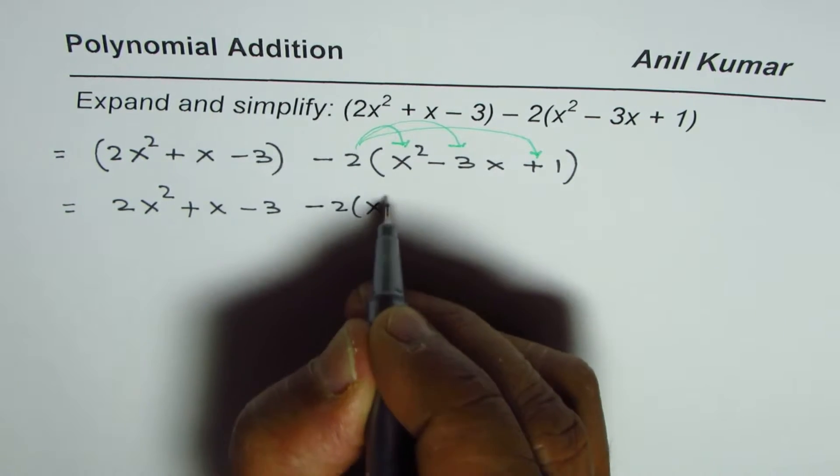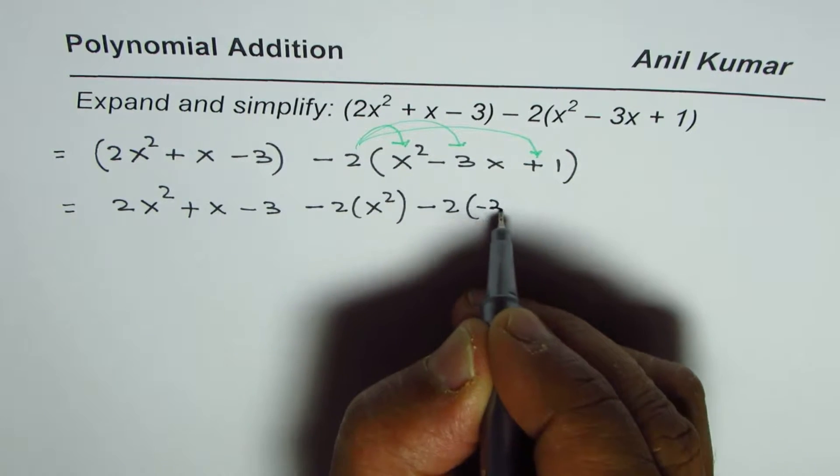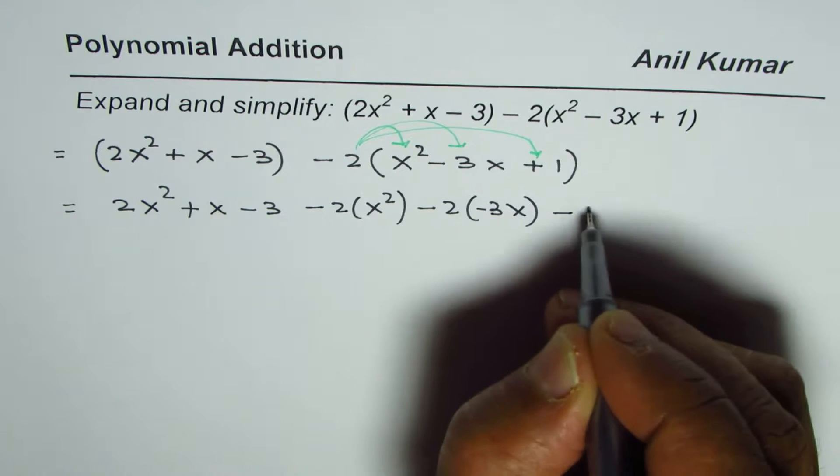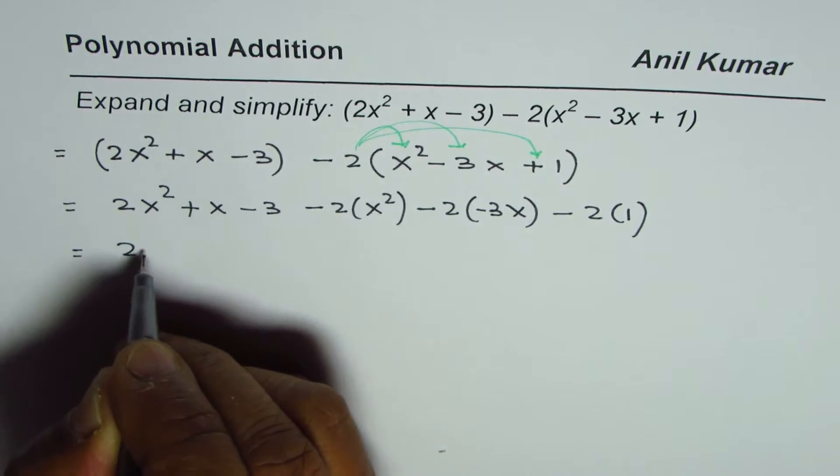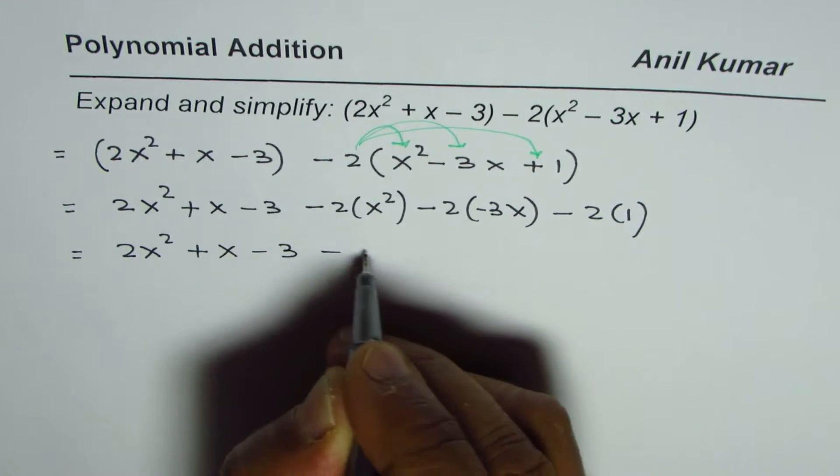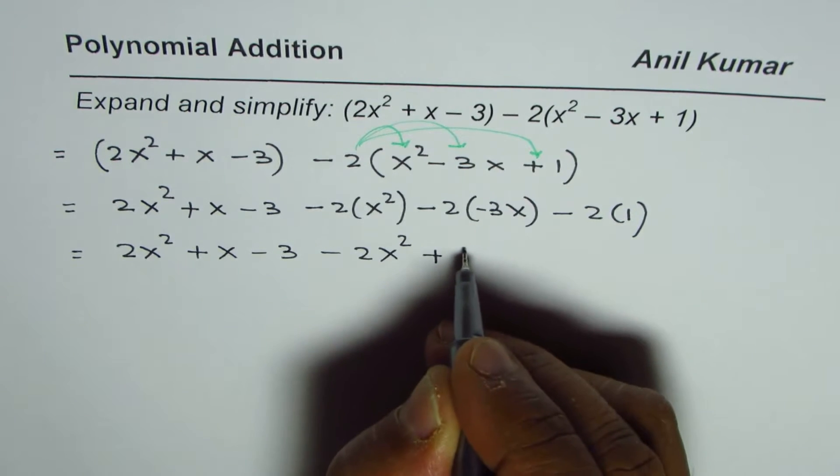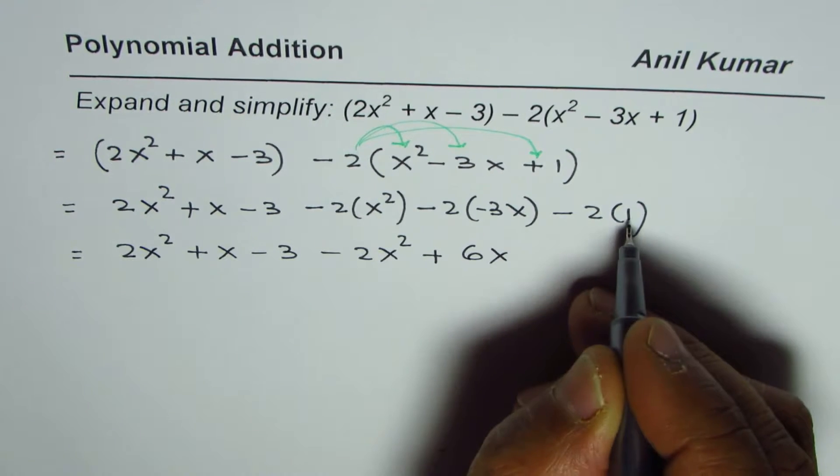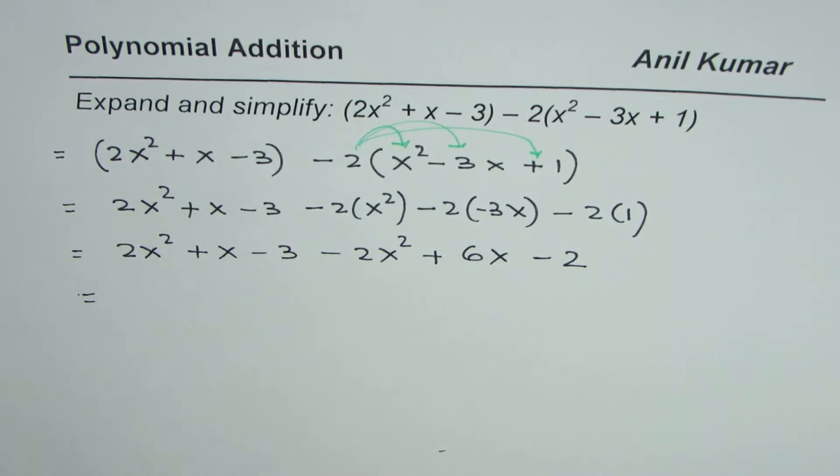So basically it is -2 times x², and then we have -2 times -3x, and then we have -2 times 1. So what we get here is 2x² + x - 3 - 2x². Minus times minus is plus 6x. 2 times 3 is 6. 2 times 1 is 2, minus 2.